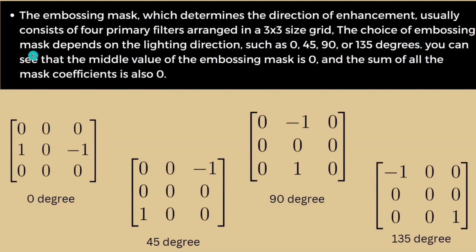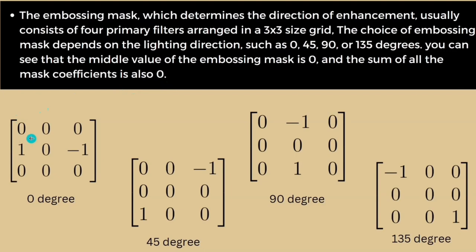The choice of embossing mask depends on the lighting direction: zero degree, 45 degree, 90 degree, or 135 degree. You can see that the middle value of the embossing mask is always zero for the primary matrix, and the sum of all the mask coefficients is also zero — one minus one equals zero.